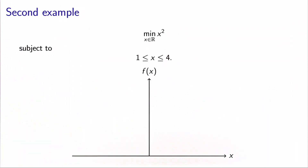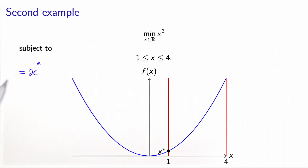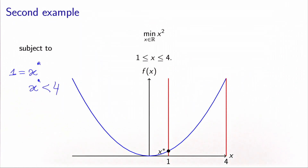Let's take another example. Now I want to minimize the same function x squared, but I require that x is between 1 and 4. Let's plot the function and the two constraints. In this case, the optimal solution is equal to 1. We can verify that x star equals 1, and x star is strictly less than 4. So the constraint x greater or equal to 1 is an active constraint, while the constraint x less or equal to 4 is an inactive constraint.